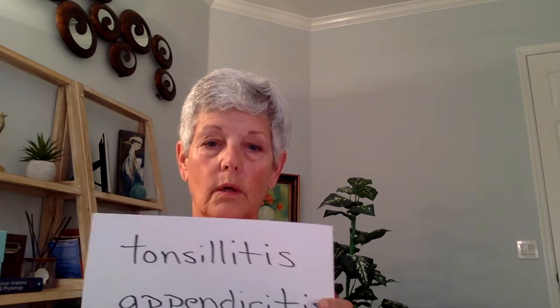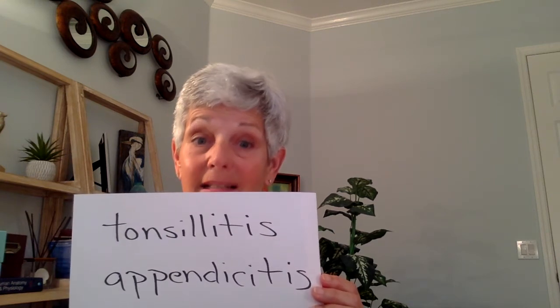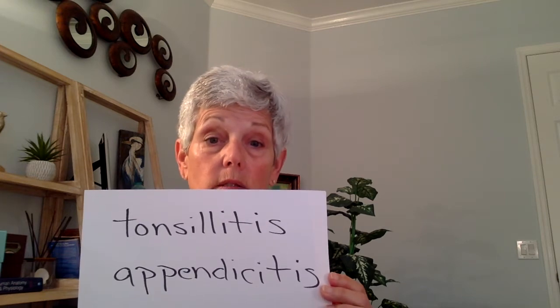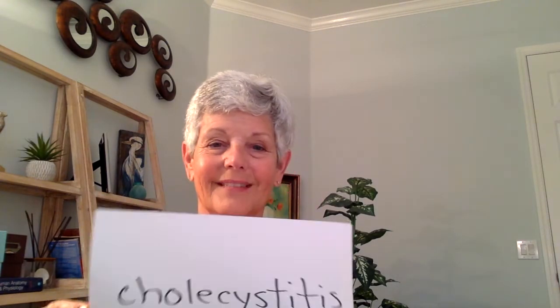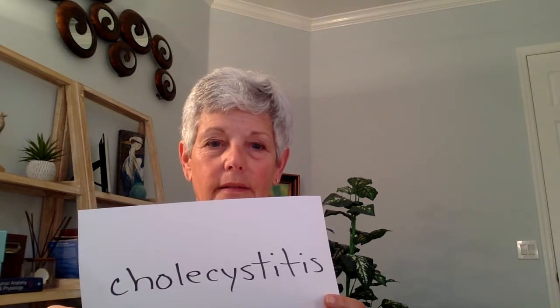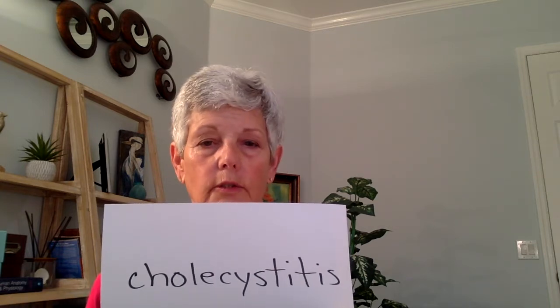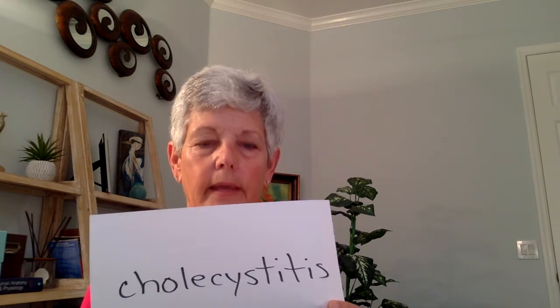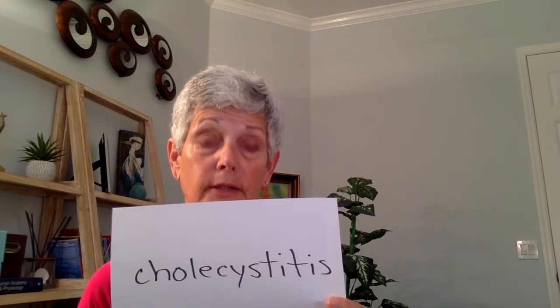Cholecystitis. Now if that's confusing to you, let's work backwards and let me convince you that you do know exactly what that word means, now that you know cholecyst means gallbladder. You know what these two words mean: tonsillitis and appendicitis. Tonsillitis means the tonsils are inflamed. Appendicitis means it's inflamed. So if you see itis on the end of a word, it indicates inflammation. That must mean cholecystitis means an inflamed gallbladder. And you're exactly right.